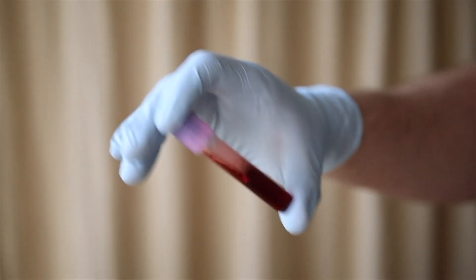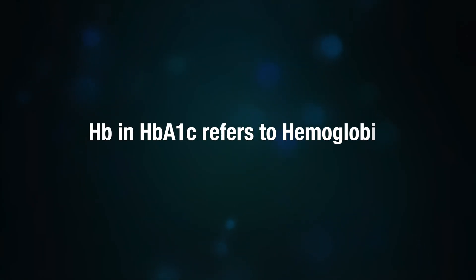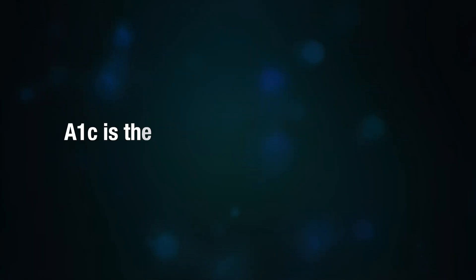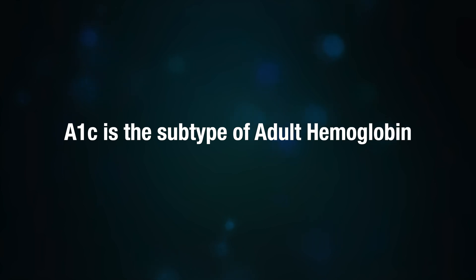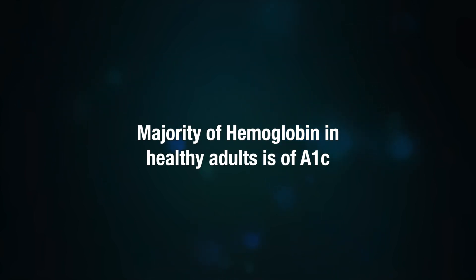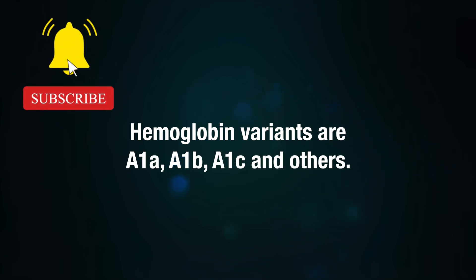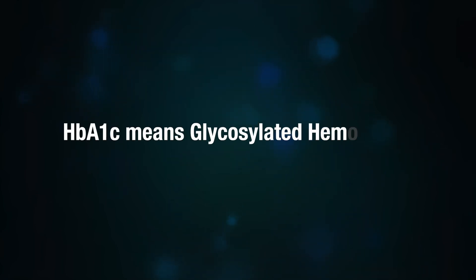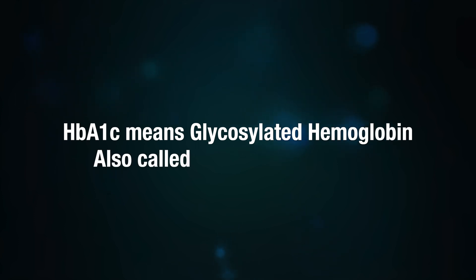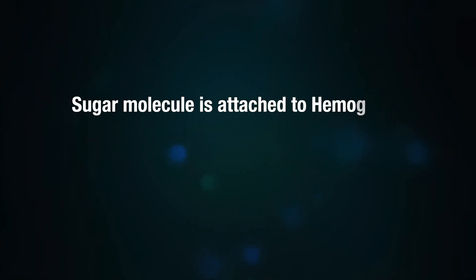What is tested? The 'Hb' in HbA1c refers to hemoglobin. A1c is a subtype of adult hemoglobin — the majority of hemoglobin in healthy adults is of type A1. Other hemoglobin variants include A1a, A1b, A1c, and others. HbA1c means glycosylated hemoglobin, also called glycated hemoglobin, which means a sugar molecule is attached to the hemoglobin.